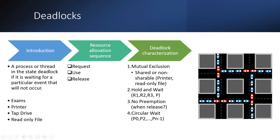The rest is like resource allocation sequence — multiple processes are there, they are requesting for the critical section to perform some execution. What is the sequence of resources and how are they allocated to those processes?